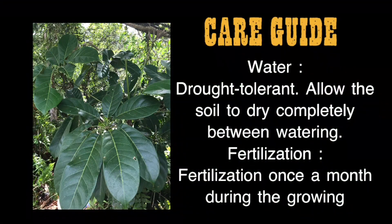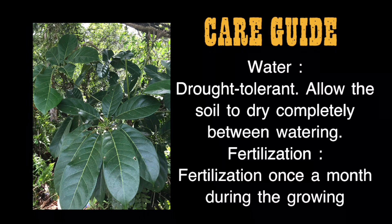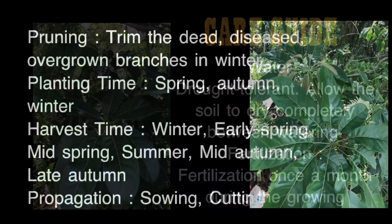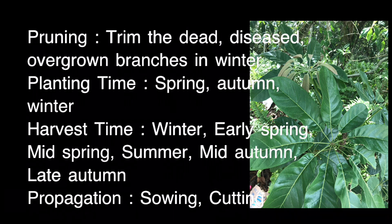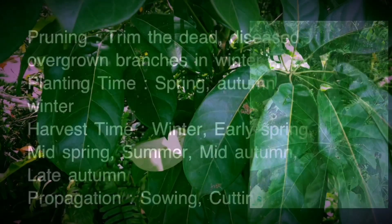Care Guide: Water — drought tolerant; allow the soil to dry completely between watering. Fertilization — once a month during the growing season. Pruning — trim dead, diseased, or overgrown branches in winter. Planting time — spring, autumn, or winter. Harvest time — winter, early spring, mid-spring, summer, mid-autumn, late autumn. Propagation — sowing and cutting.